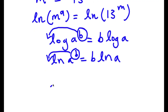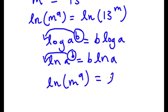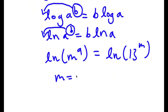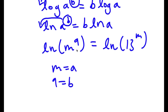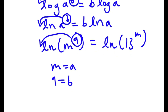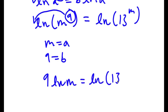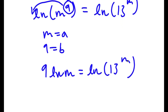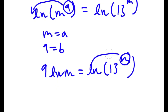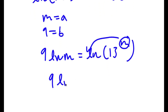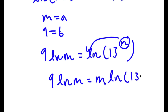So in this case, I have ln of m to the power of 9 equal to ln of 13 to the power of m. I can think of m as a and 9 as b, so I can move the exponent 9 to the front. This gives me 9 times ln m, equal to ln of 13 to the power of m. Then I do the same thing on the right side, moving m to the front, giving 9 times ln m is equal to m times ln 13.